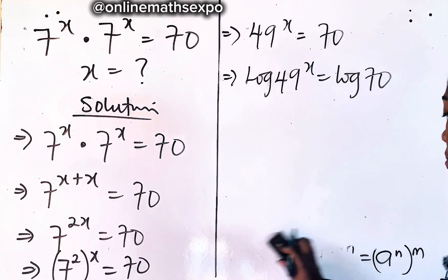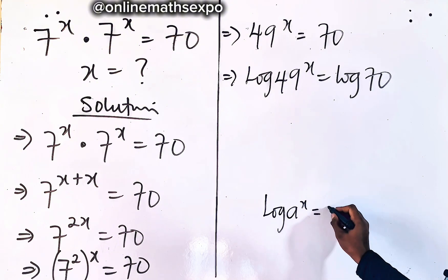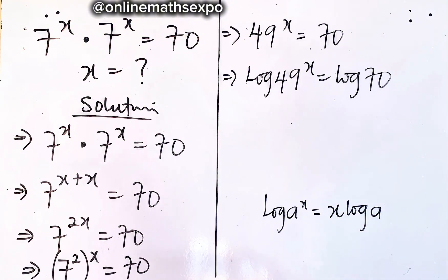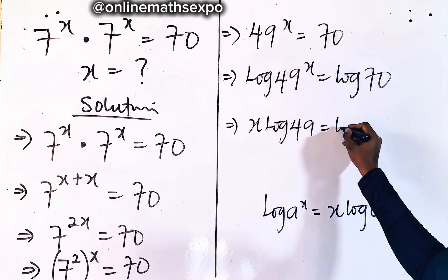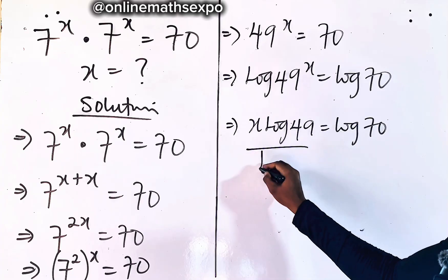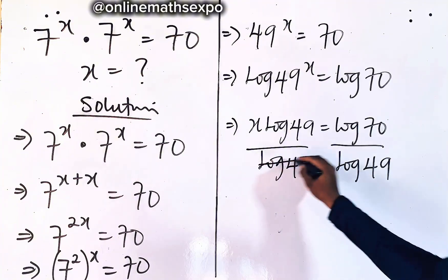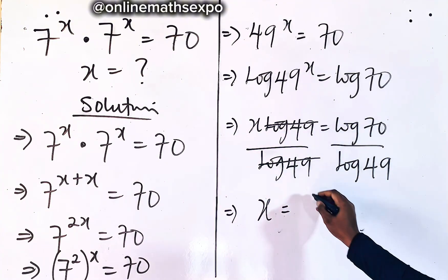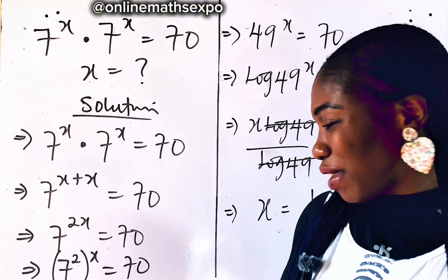Now, what do you do? Remember that for every log of a raised to the power of x, the power multiplies out — we have x times log a. So apply it here: we have x times log 49 is equal to log of 70. Our target is x, so we divide both sides by log of 49. We are left with x is equal to log of 70 divided by log of 49. But it's not simplified yet, so we are going to simplify it.